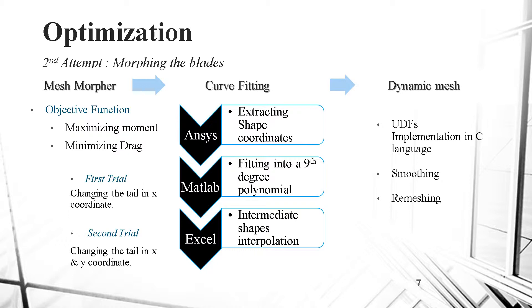The second attempt of optimization was morphing the blades. The team created a methodology to work on; this methodology will then lead to the optimization of the turbine. Mesh Morpher, an add-in found in ANSYS, was used to perform the morphing. In Mesh Morpher, we start always by defining the objective function that we need to optimize. In our case, we tried two functions: the first is maximizing the moment, and the second is minimizing the drag. Minimizing the drag has also two trials, different in the way the deformation is done, first in the x direction and second in the x and y directions.